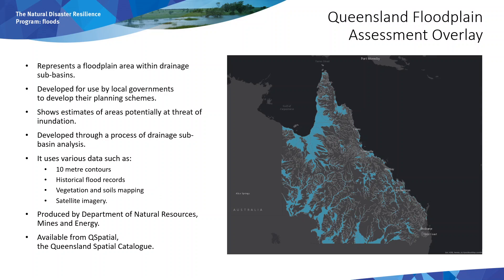The Queensland floodplain assessment overlay shows the floodplain areas within the drainage sub-basins in Queensland. It has been developed for use by local governments as a guide to potential flood hazard areas and shows an estimate of areas potentially at threat of inundation by flooding. The overlay data has been developed through a process of drainage sub-basin analysis using data sources including 10 metre contours, historical flood records, vegetation and soil mapping and satellite imagery. This overlay data was an initial assessment and has been refined and added to with basin level modelling in some areas. It is produced by the Department of Natural Resources and Mines and Energy and is available through Q-SPATIAL, the Queensland spatial catalogue, as well as other online tools which we'll cover later.